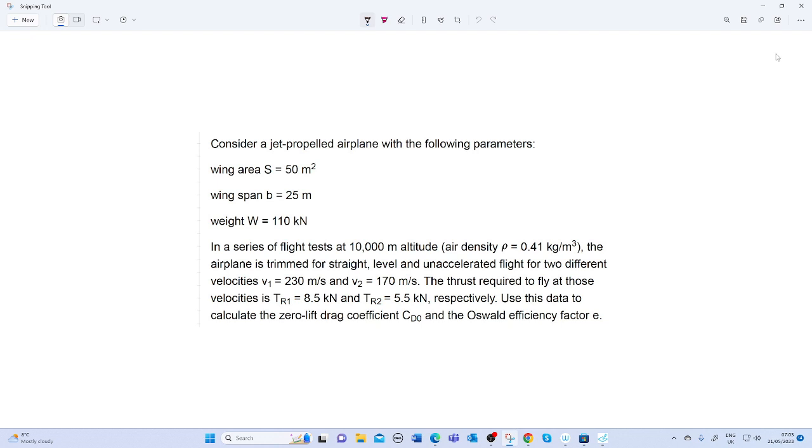Consider a jet propelled airplane with the following parameters: the wing area S equals 50 meters squared, the wingspan b equals 25 meters, the weight W equals 110 kilonewtons. In a series of flight tests at 10,000 meter altitude, air density ρ equals 0.41 kg/m³, the airplane is trimmed for straight level unaccelerated flight.